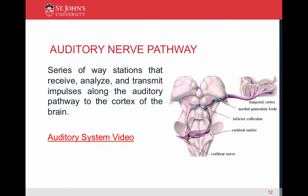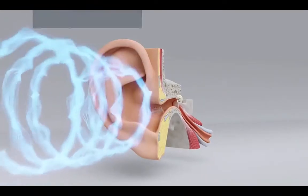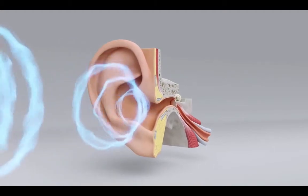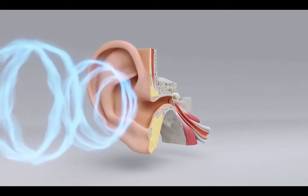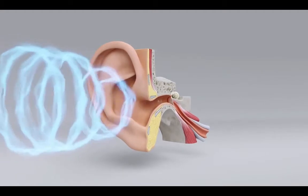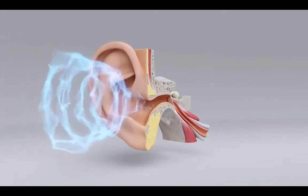The auditory nerve is a series of way stations that receive, analyze, and transmit impulses along the auditory pathway to the auditory cortex of the brain. Sound is collected by the outer ear, which consists of the auricle and the external auditory canal. The sound is guided through the ear canal to the middle ear.